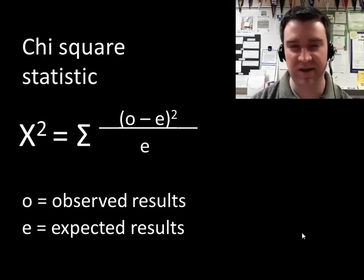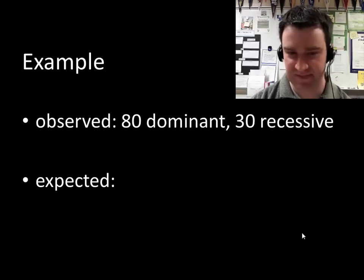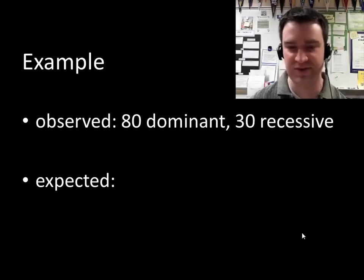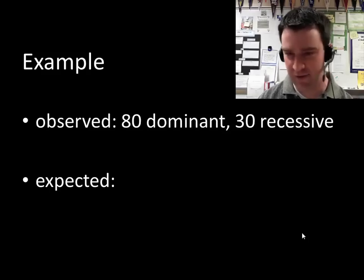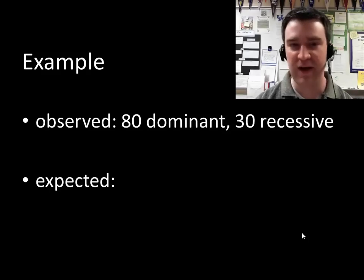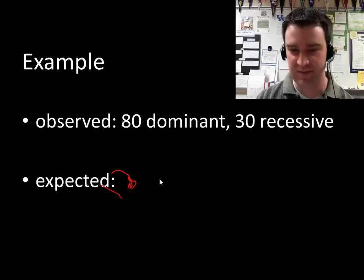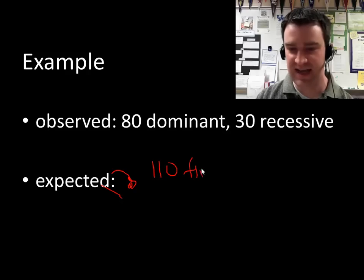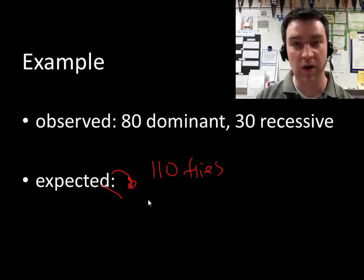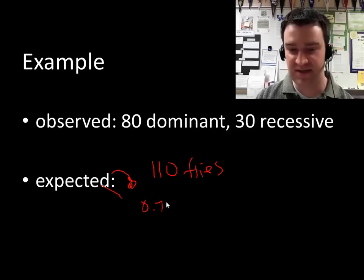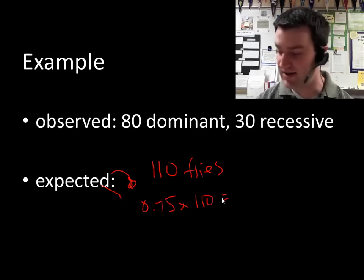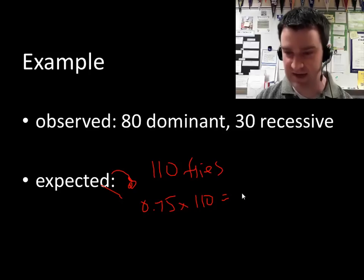Let's go through the example. If we observed 80 dominant and 30 recessive, we need to figure out what we might have gotten had it matched the expected three-to-one ratio. We add up the total number of flies — 110 total. We know that 75% of them should have been dominant, so what's 75% of 110? I get 82.5.